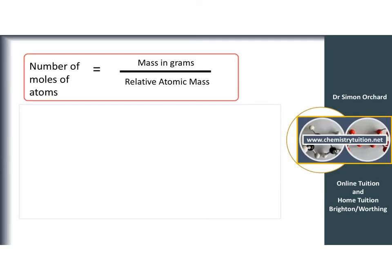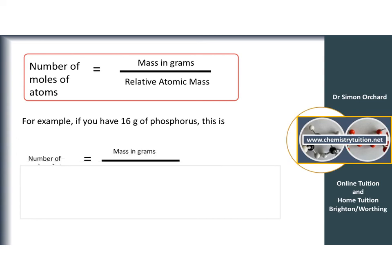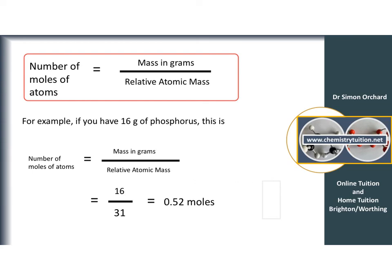There are a few equations you need to remember to use the mole correctly. To work out the number of moles: moles = mass (in grams) ÷ relative atomic mass. For example, 16 grams of phosphorus: looking up the periodic table, the relative atomic mass of phosphorus is 31. So 16 ÷ 31 = 0.52 moles of phosphorus — about half a mole.